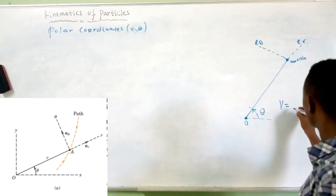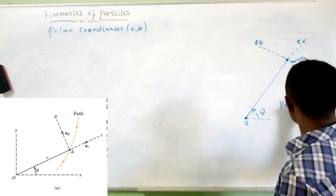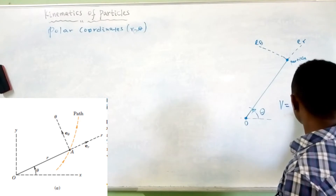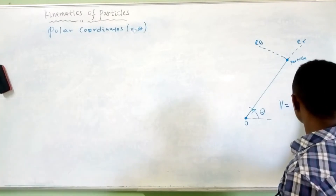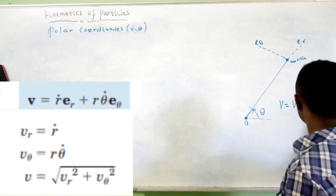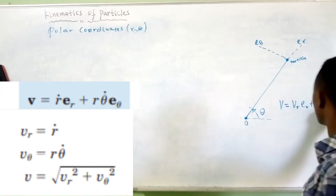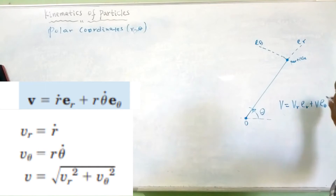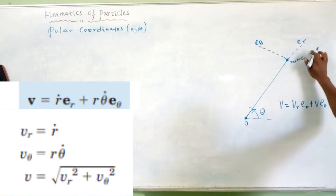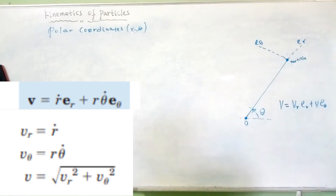So, the velocity along the radial direction is e_R, plus the velocity along the angular direction e_theta. This is the angular direction and this is the radial direction.